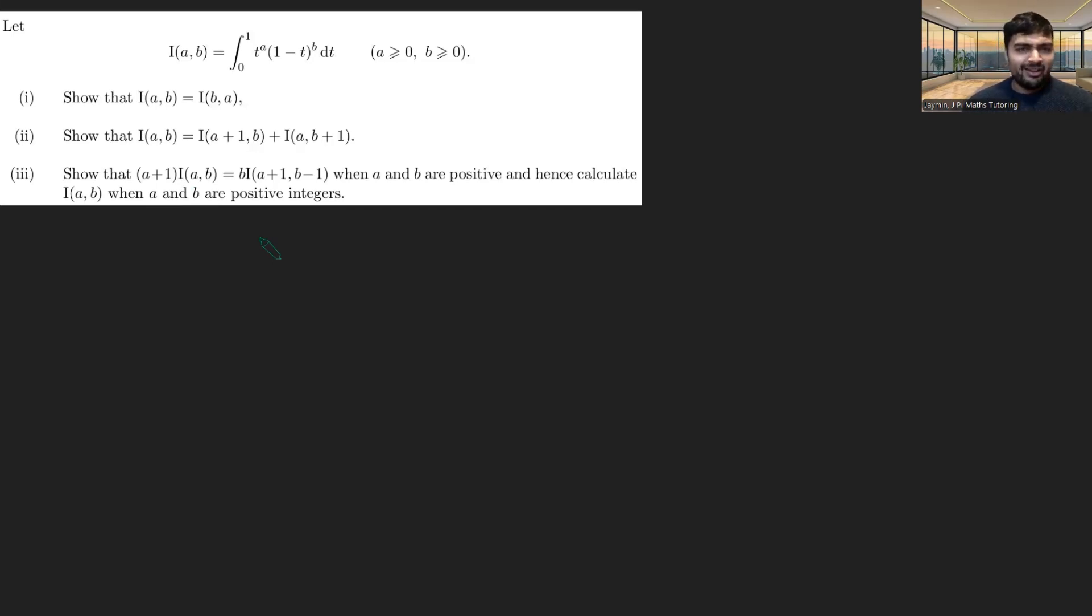Let's dive in with the first part. Show that I(a,b) equals I(b,a). So if we swap the letters around a and b, this thing stays the same. You may wonder how we do that. The trick here is to basically somehow swap the t and the 1 minus t. Well, the way to do that is by a little substitution. If we let u equal 1 minus t, and we calculate this integral again...